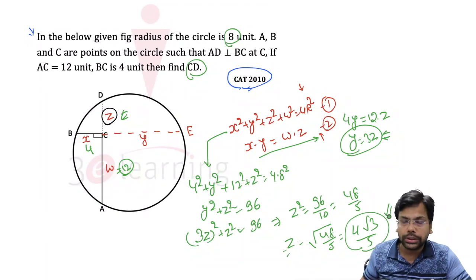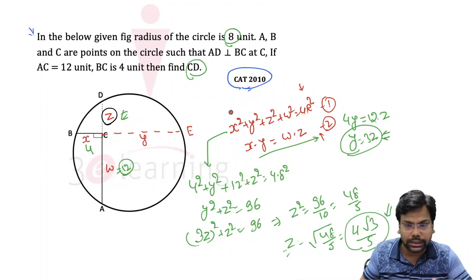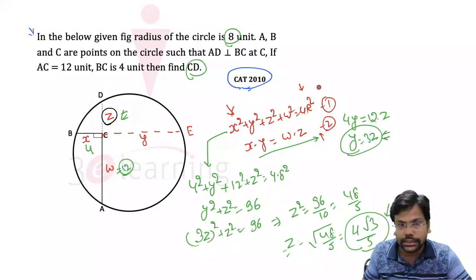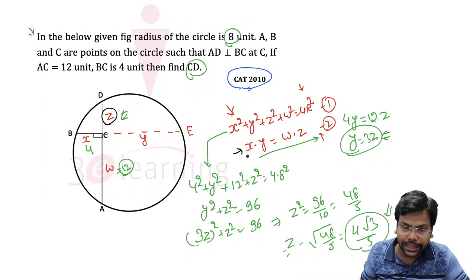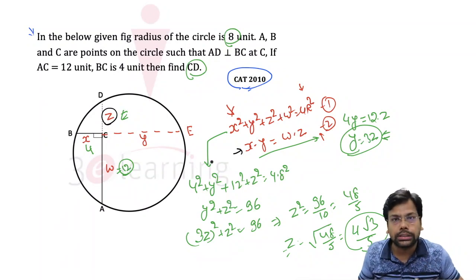You have two concepts: one is the perpendicular chord radius relationship, and the second one is the chord product property by similarity. This is both concepts within a question.